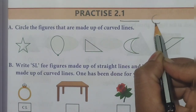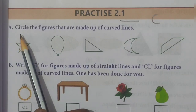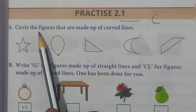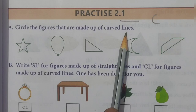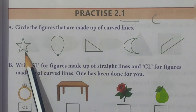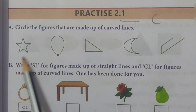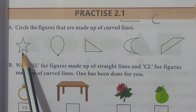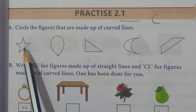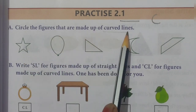Question A: circle the figures that are made up of curved lines. Now see the first figure. Figures in this picture we call diagrams or figures — both are the same. We have to identify the figure which is made up of curved lines and circle it.